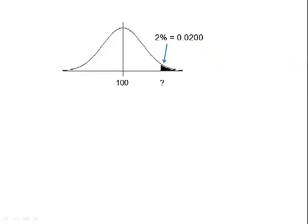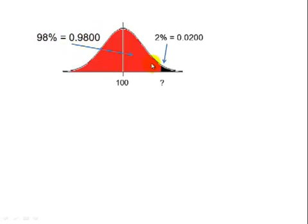From the problem, we have to score in the top 2%. And 2% is the same thing as 0.0200. Now, table 5 gives us area to the left. This is area to the right. So our first step is we need to find the area to the left. And, of course, this is 1 minus 2%, or 98%, 0.9800. So this is the area that we want to look for in table 5.